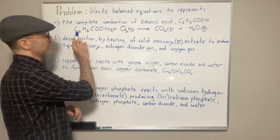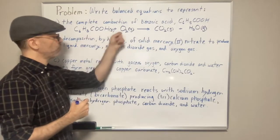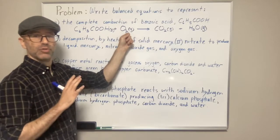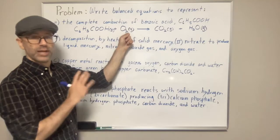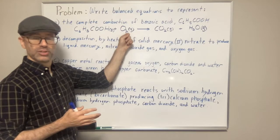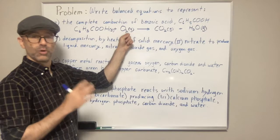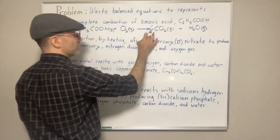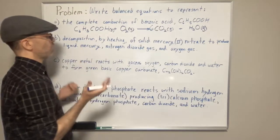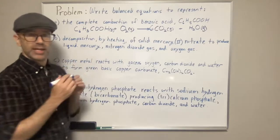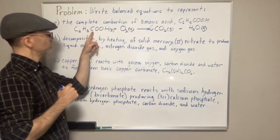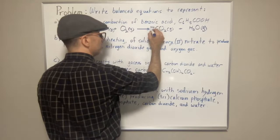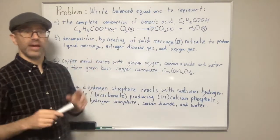We have six carbons on the benzoic acid side. But wait — C6H5COOH actually has six plus one, so seven carbons total. We need a coefficient of 7 in front of CO2. Remember, when balancing you never change subscripts — only add or change coefficients. Seven times one gives us seven carbons on each side. Carbons are balanced.